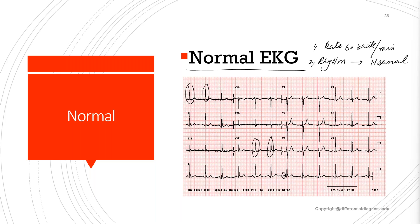Look for any conduction abnormalities. The PR interval is normal, so there are no conduction abnormalities present. Are there any ST or T wave abnormalities? There are no ST or T wave abnormalities present. You can go over all 12 leads — no T wave abnormalities present. So this is a normal EKG.